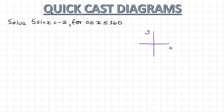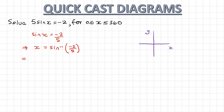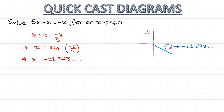So here's an example for sine. We want to solve this equation. The first thing I'm going to do is divide both sides by 5, then do the sine inverse of both sides. So x equals the sine inverse of negative 2 over 5, or negative 0.4. On my calculator, I get x equal to negative 23.578. Then I draw that angle on my simplified cast diagram — on this cross.